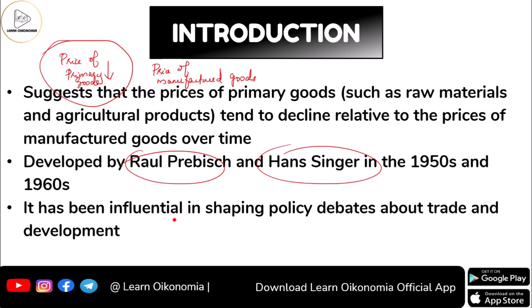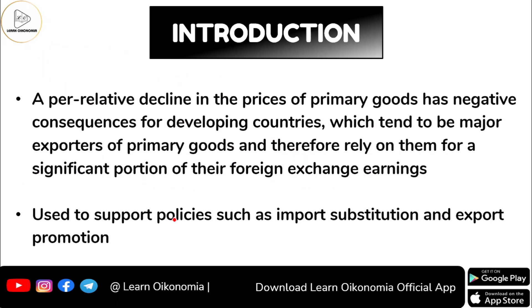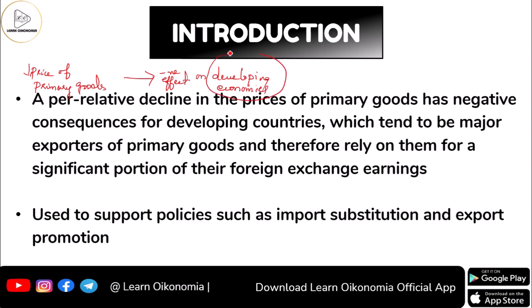A relative decline in the prices of primary goods — that means agricultural goods and raw materials — has caused some negative effects on developing economies. This has a negative influence on developing economies because these developing economies are the primary exporters of primary commodities.